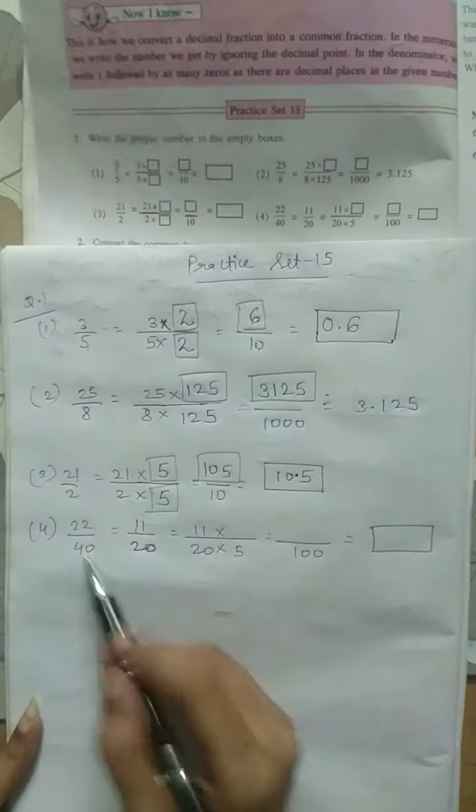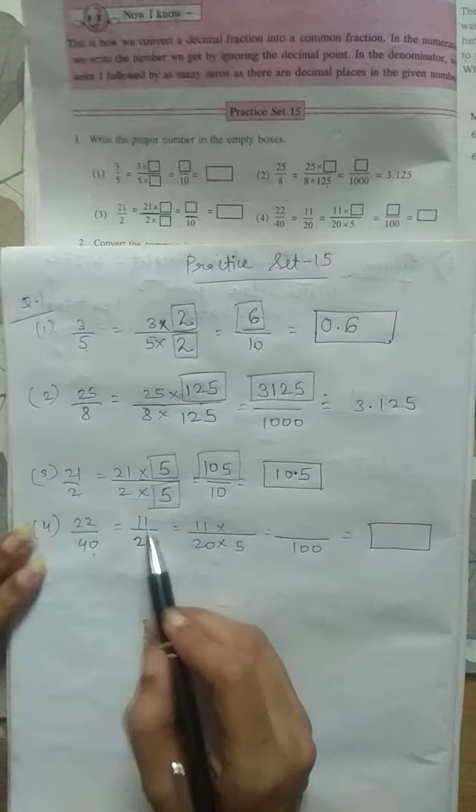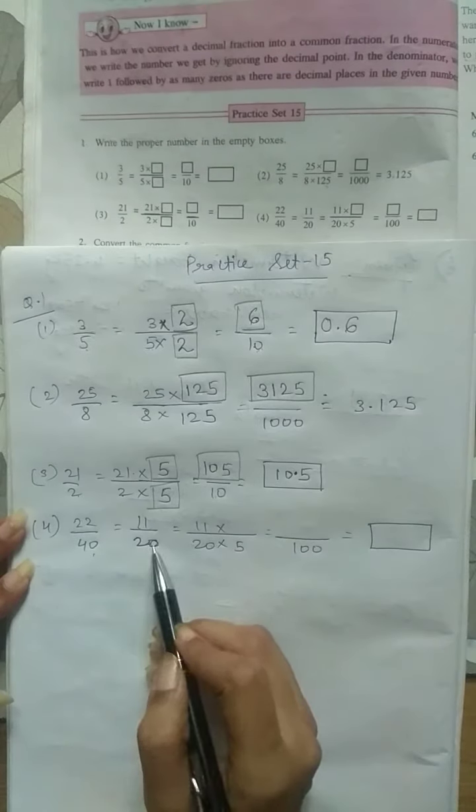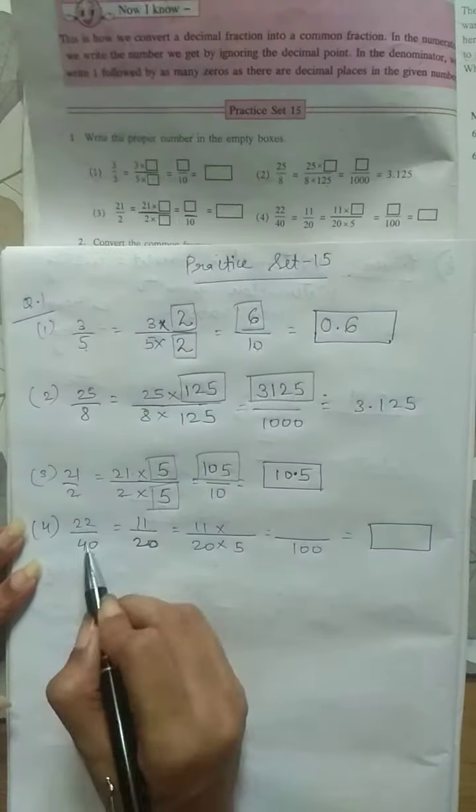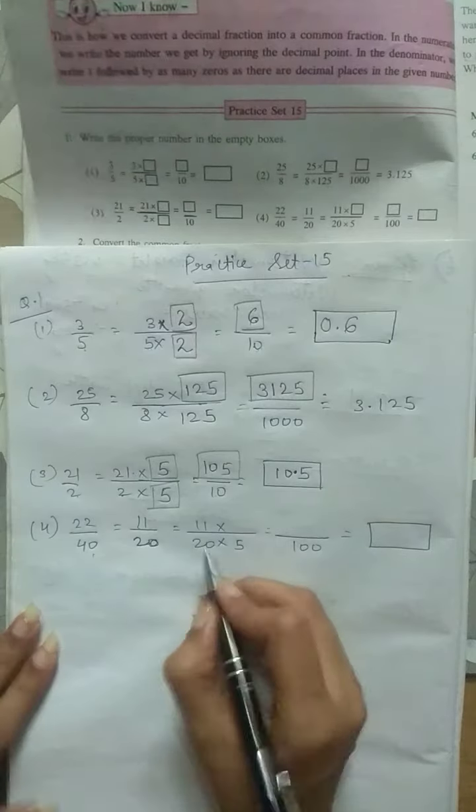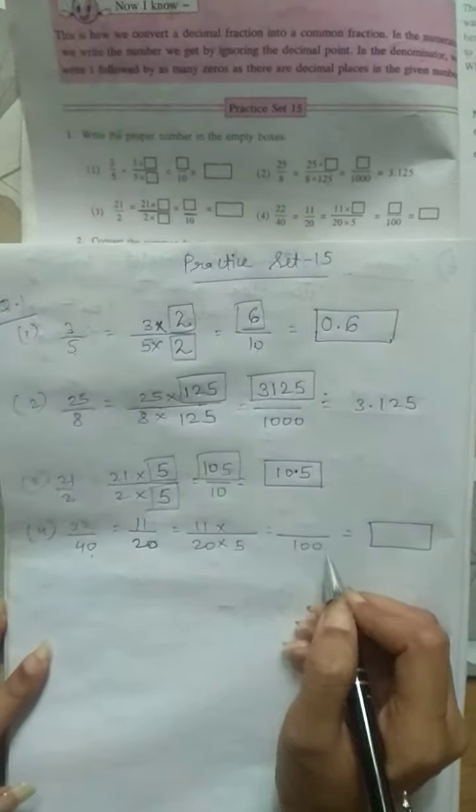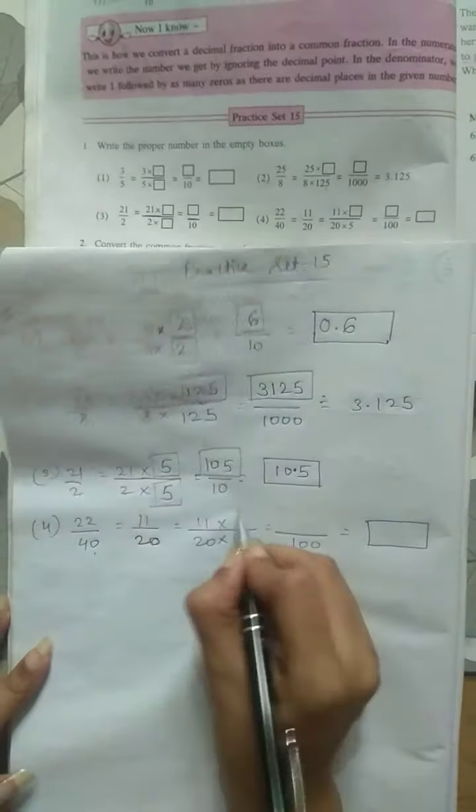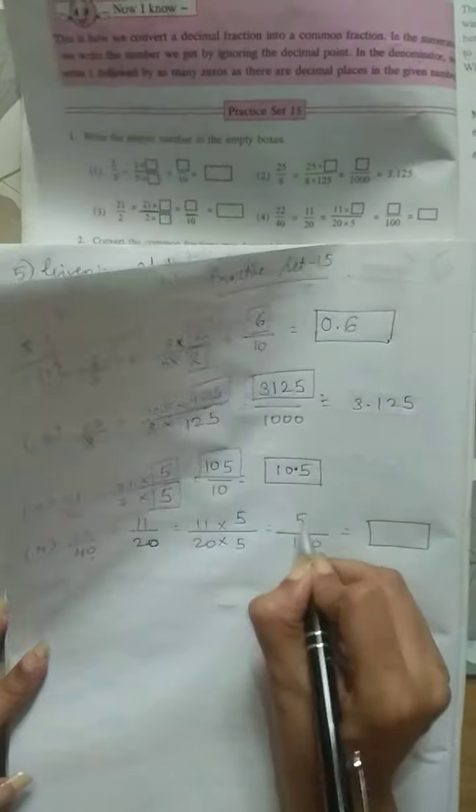Lastly, 22 upon 40. The equivalent fraction is 11 upon 20, reduced by 2. 2 times 11 is 22. Now 20 is multiplied by 5, gives us 100. So 11 is also multiplied by 5, giving us 55.